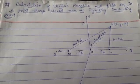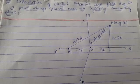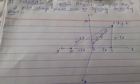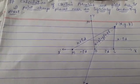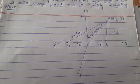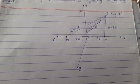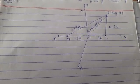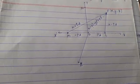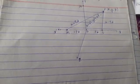Good afternoon everyone. Today we are going to derive expressions for electric potential and field due to a point charge placed near an infinite conducting sheet. We are going to find out electric potential and electric field at any point in the region of space created by the sheet. This is possible only with the help of electrical images, so we use the method of electrical images to calculate the electric field and electric potential.